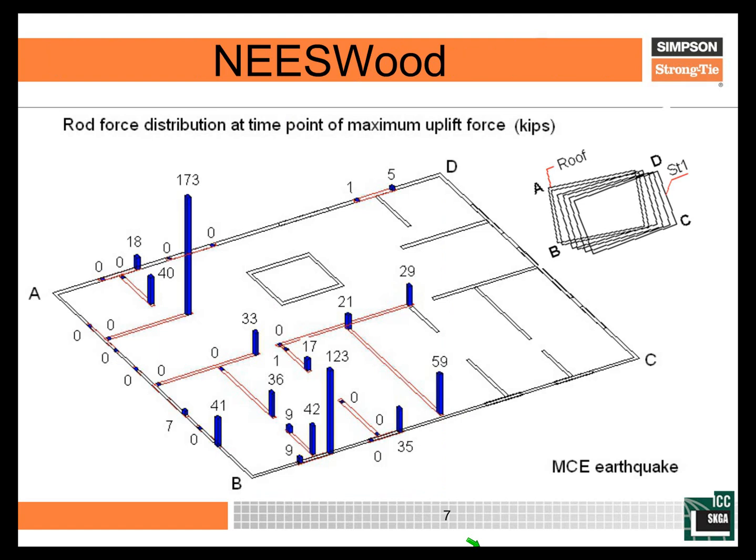From that testing, we had measurements on the Simpson ATS system — the continuous tie-down rods in the structure — and we were able to get the actual peak demands generated during this MCE level event. There's a number of 173 kips on two rods from side-by-side shear walls. Interestingly, on the exterior of the building on a higher aspect ratio shear panel, a single rod developed 123 kips of tension peak demand during the MCE level event.